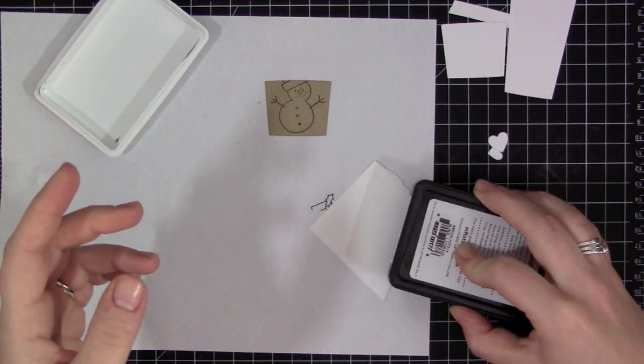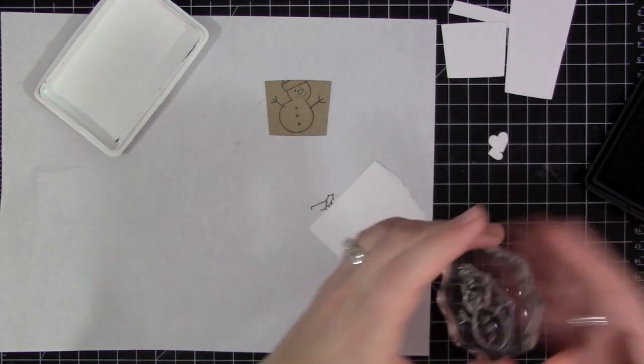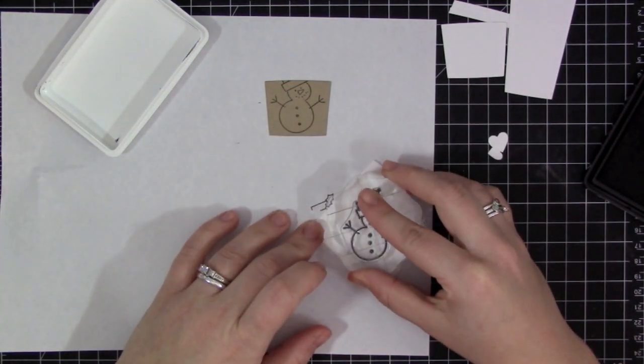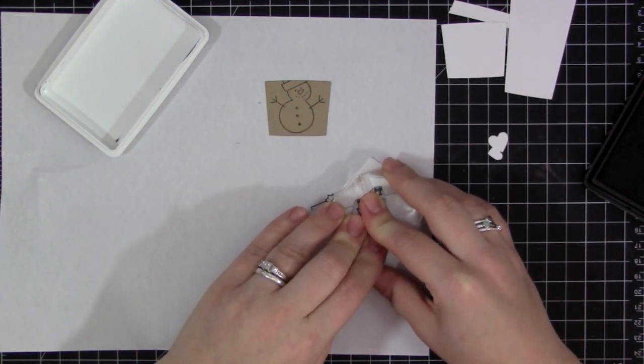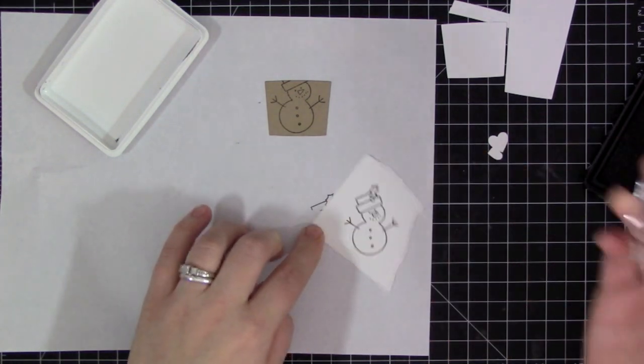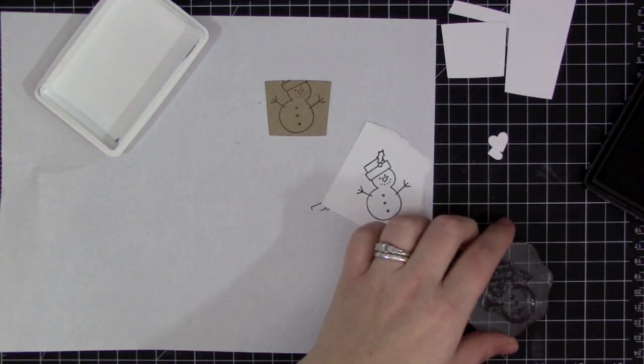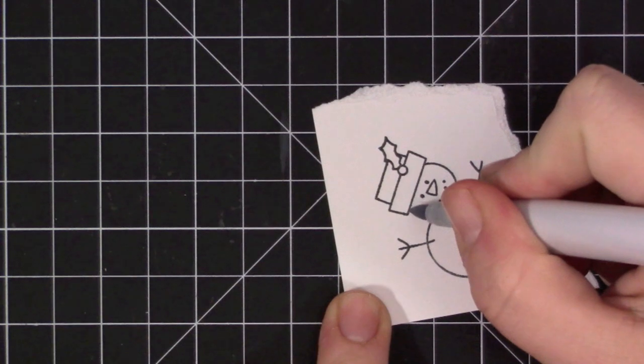So now I have him on there, I'm going to re-stamp the same image onto this little scrap piece of white card stock. And I'm using My Favorite Things Black Licorice Hybrid ink, and I'm using this just because I'm going to be using some Copic markers to accent and color in the snowman. And this ink is perfect for that since it doesn't bleed at all.